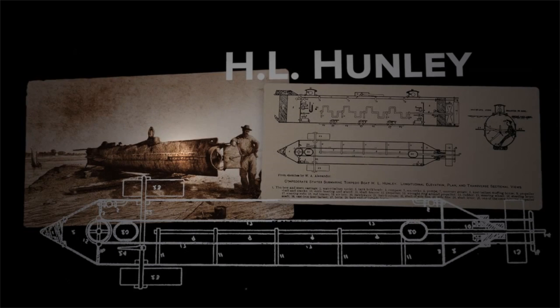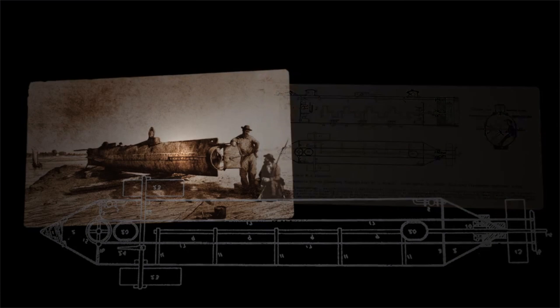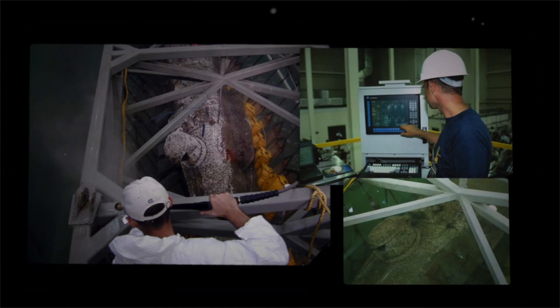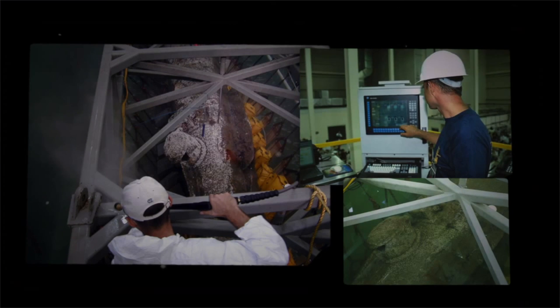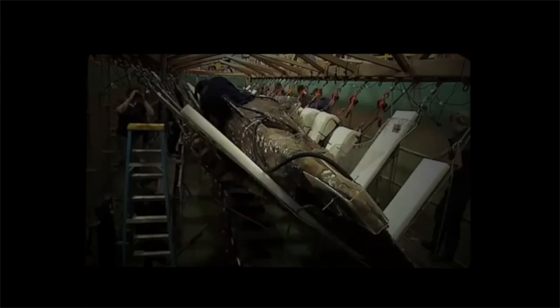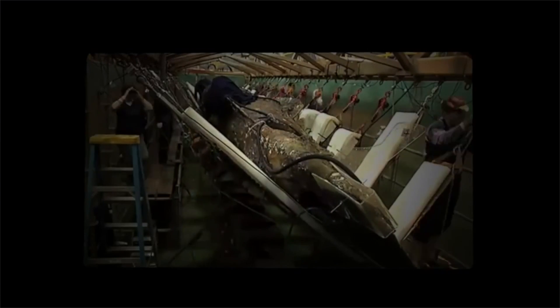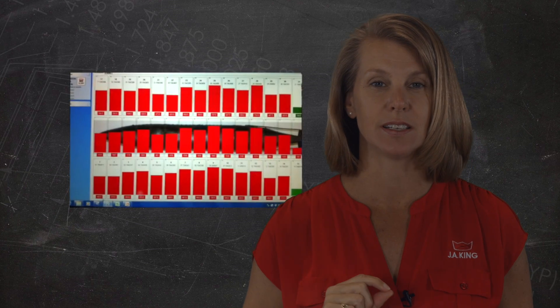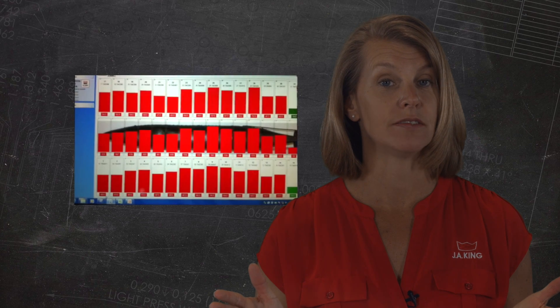And my personal favorite, the righting of the CSS Hunley submarine. It sank outside Charleston Harbor in 1864. After it was raised and excavated, J.A. King designed a system to monitor weight distribution in real time while it was being righted. Using 36 custom load cell plates, the system helped the engineers to determine exactly how much to move each sling during the process, millimeters at a time over the entire two and a half days.